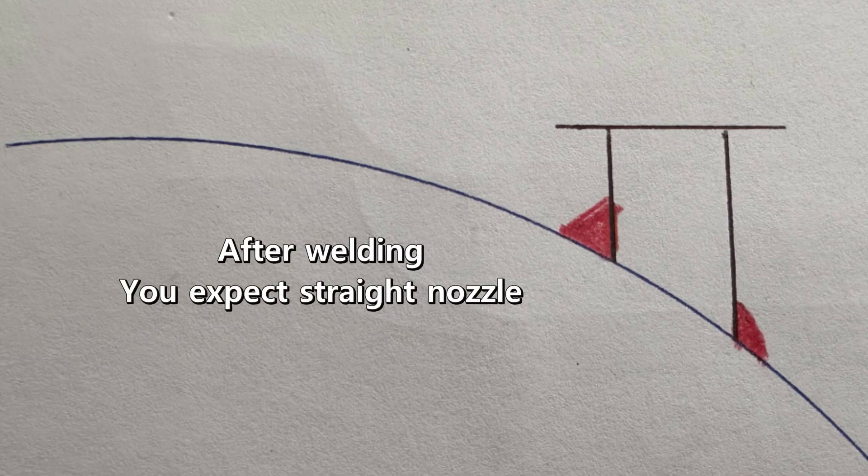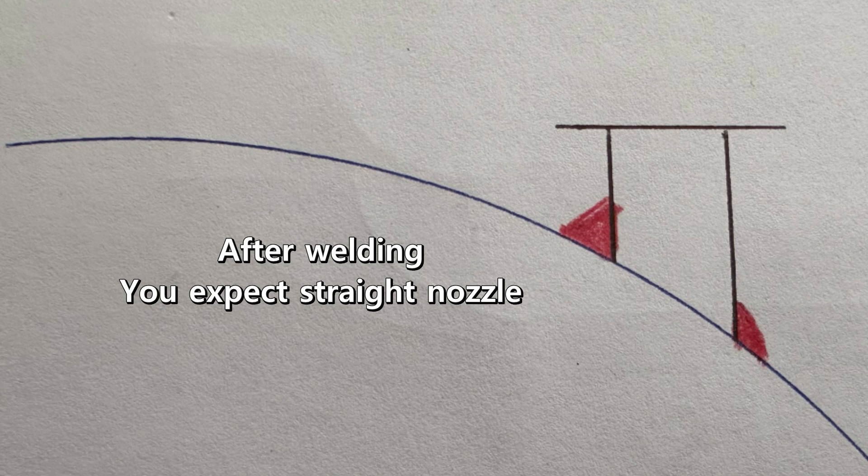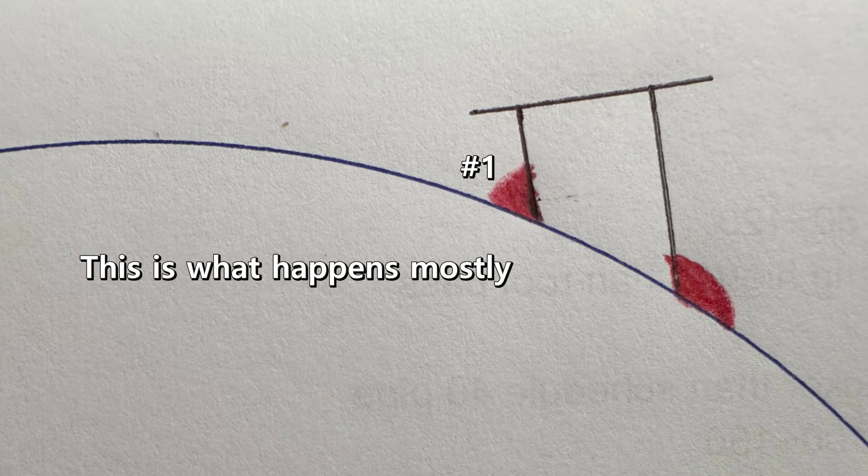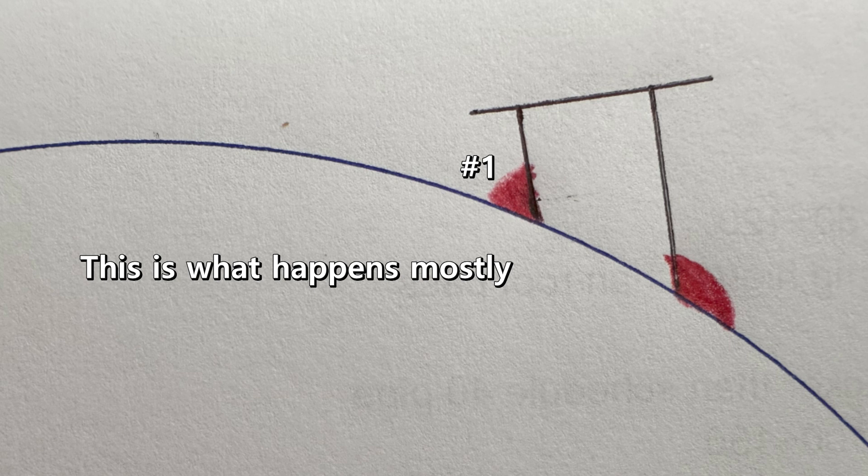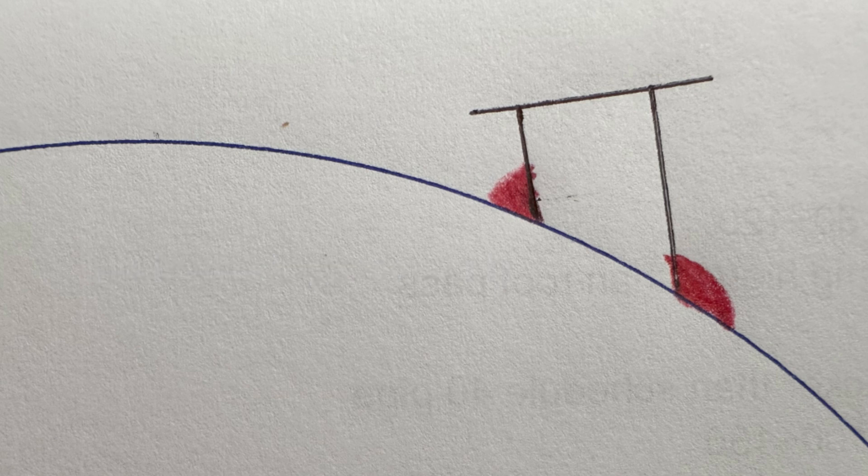Next, you will weld and expect it to be straight. Unfortunately, it will not be straight. Mostly, it will be tilted to number one side. What happened?